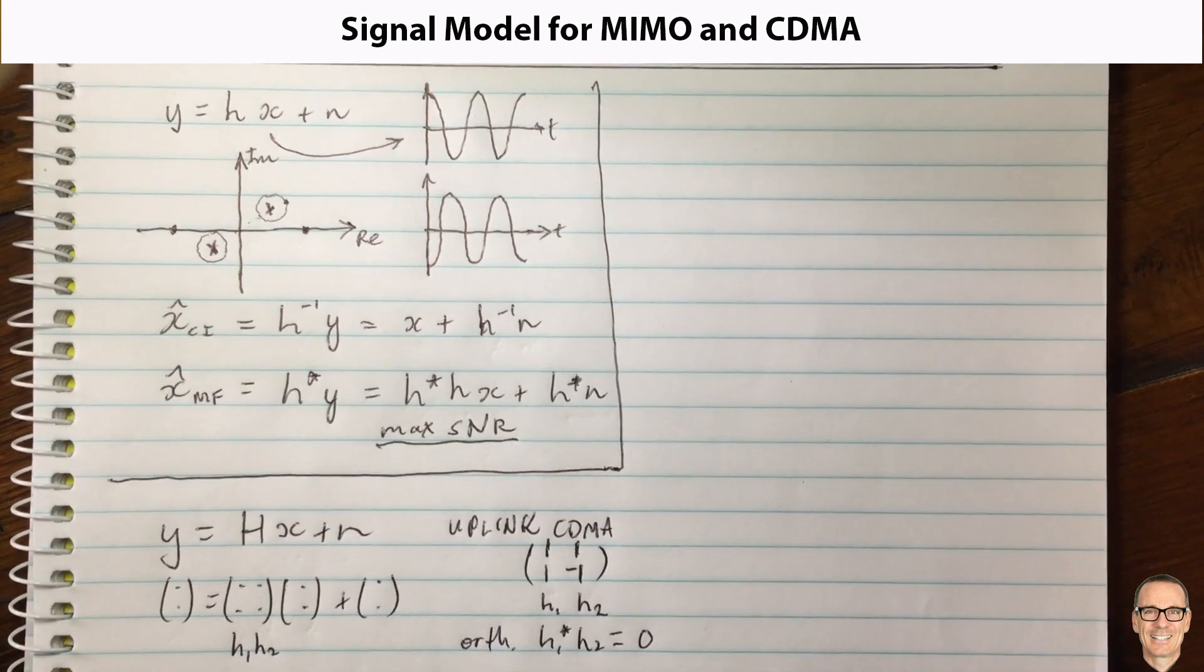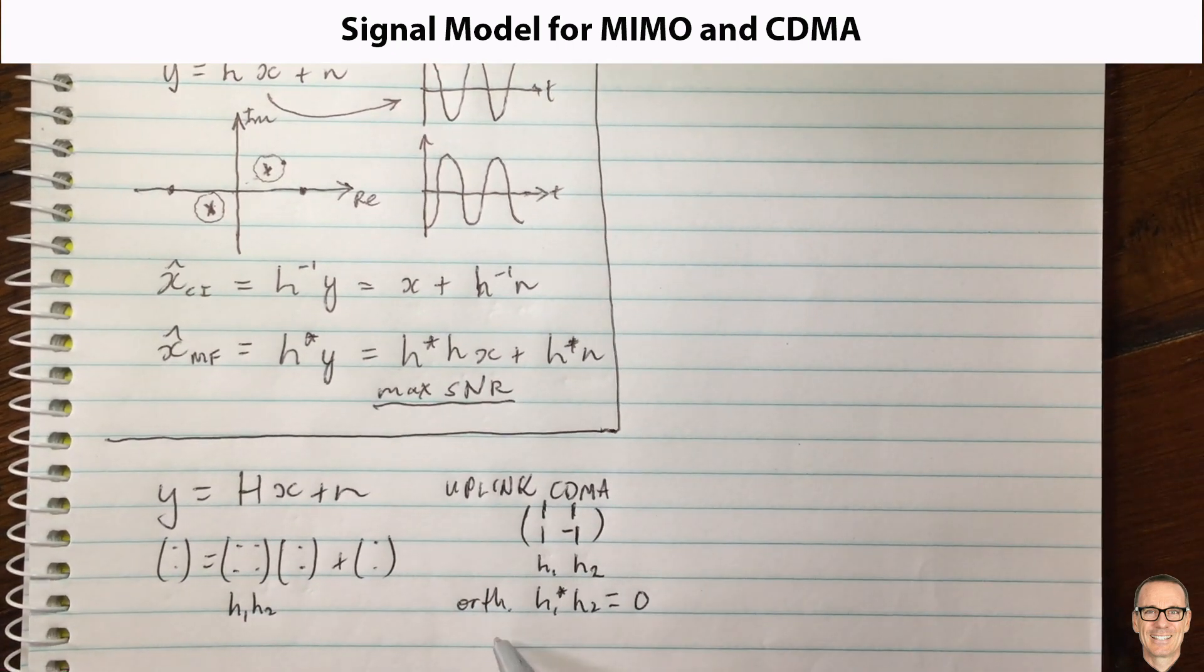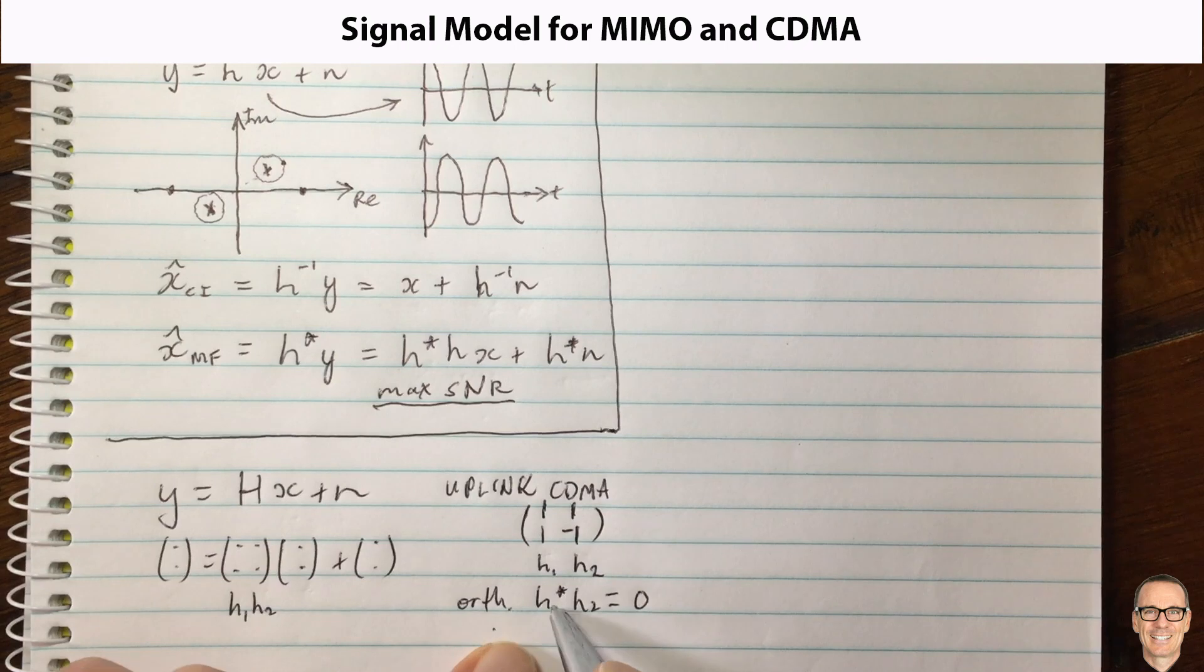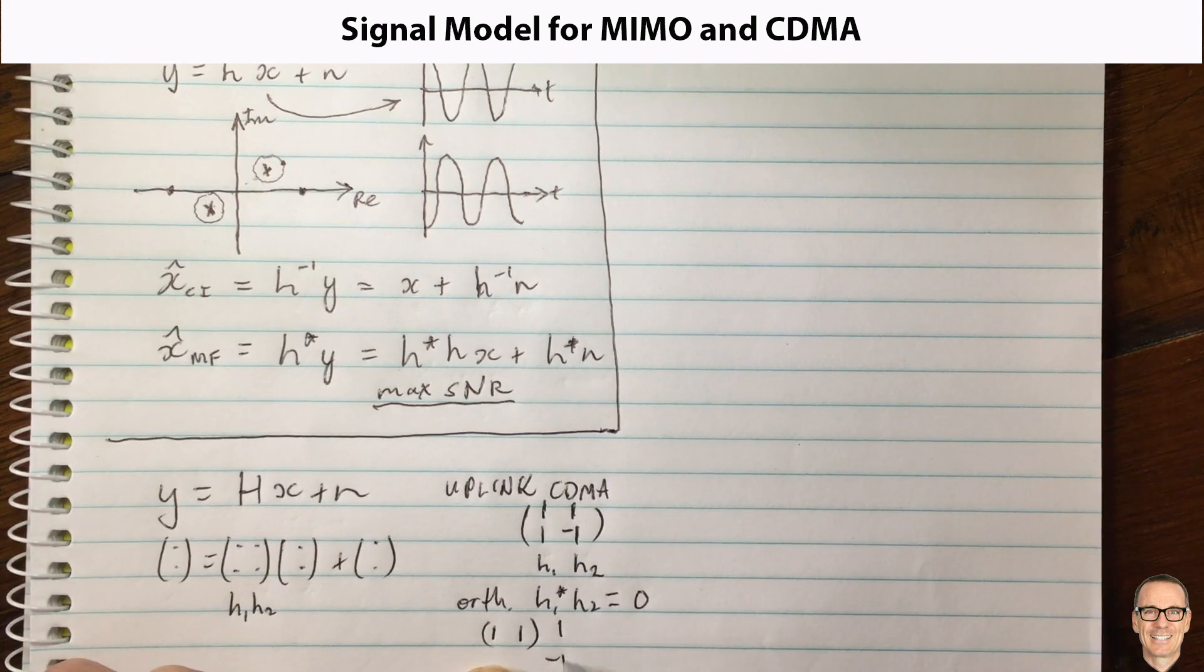I'll just draw that underneath here slightly, because this would be h1 complex conjugate is the transpose in this case because they're real numbers. So it's one one times one minus one, and that equals one times one plus one times minus one equals zero.